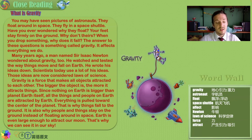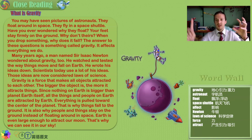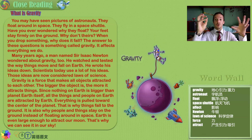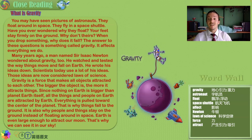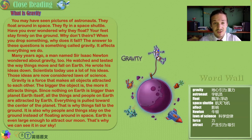It is also why people and things stay on the ground instead of floating in space. Earth is even large enough to attract our moon, and that's why we can see it in our sky. The Earth is so big that the moon has found a perfect balance where it is continually attracted to the Earth. The moon goes around the Earth, and the Earth goes around the sun because the sun is bigger than the Earth and the moon — all of these things going around bigger things in a perfect balance of gravitational attraction.